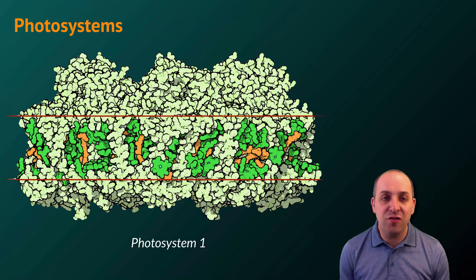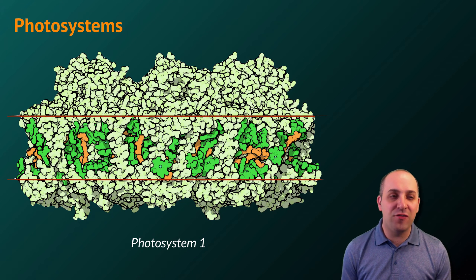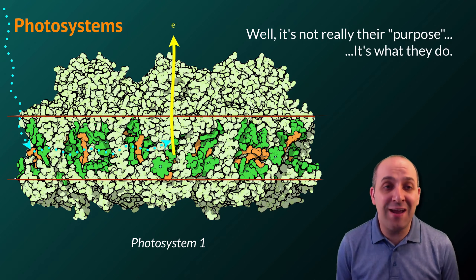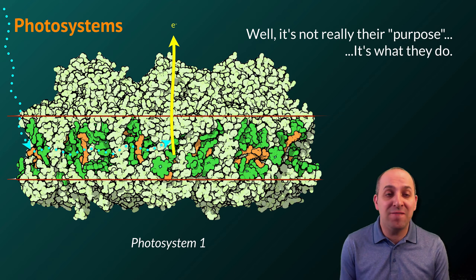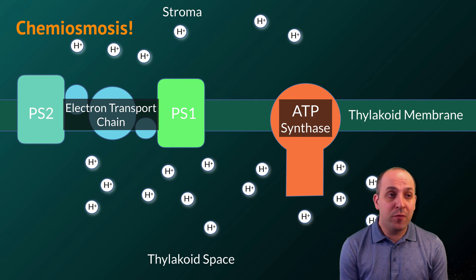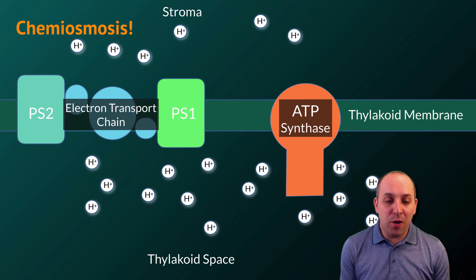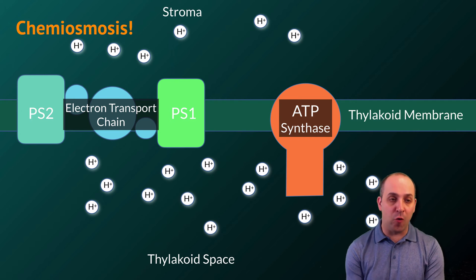Photosystems are collections of chlorophyll and other pigment molecules that are complex with proteins. It is the purpose of these photosystems to produce high-energy excited state electrons that will then be fed into an electron transport chain in another example of chemiosmosis. Chemiosmosis during the light reaction occurs at the thylakoid membrane separating the thylakoid space from the stroma.